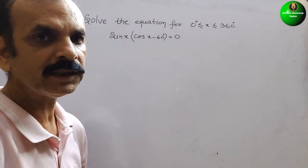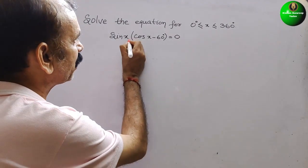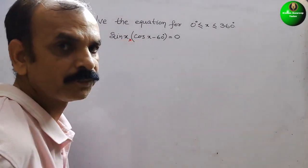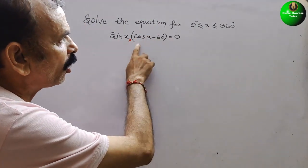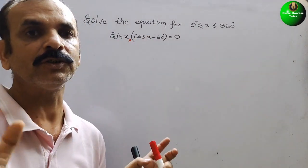If you see this, this is nothing but the multiplication in between this. It means that either sin x is 0 or cos(x - 60°) is 0.